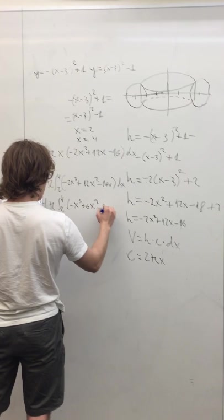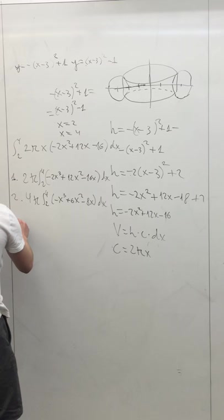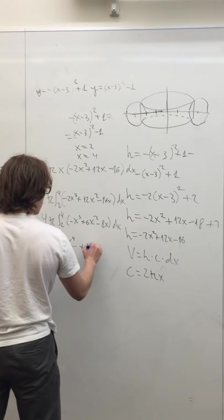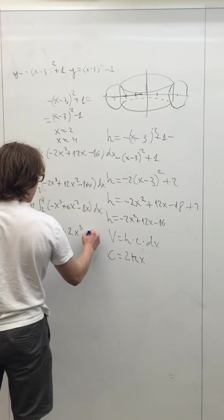And again, we take the integral of each individual term. We get negative x to the fourth over 4 plus 4x cubed minus 8x squared.